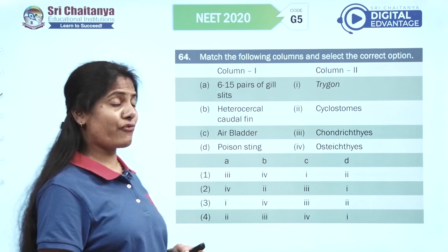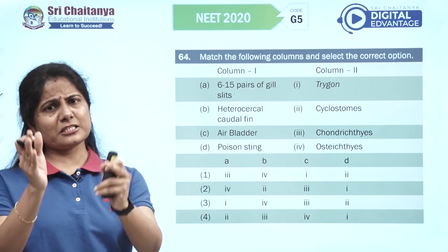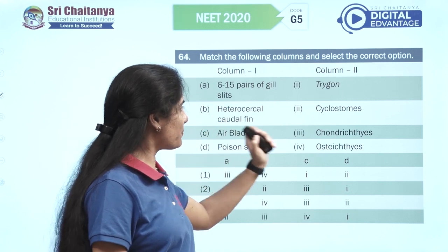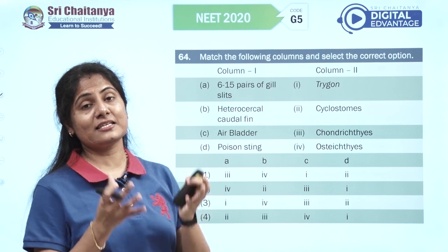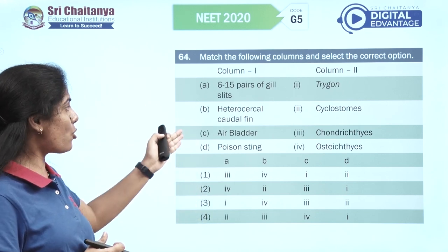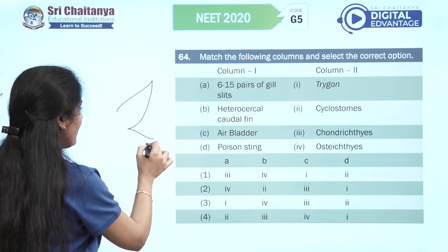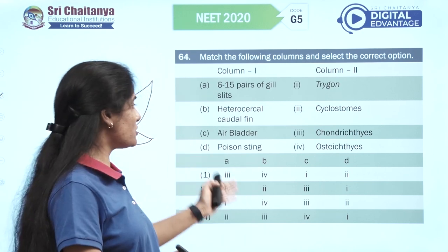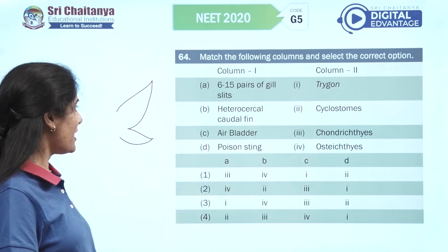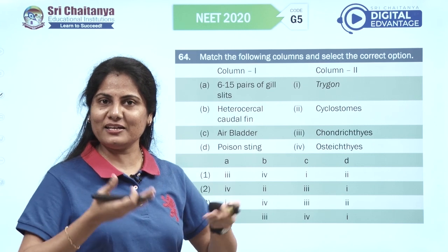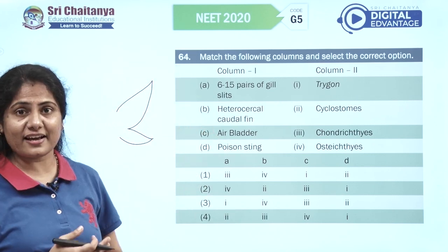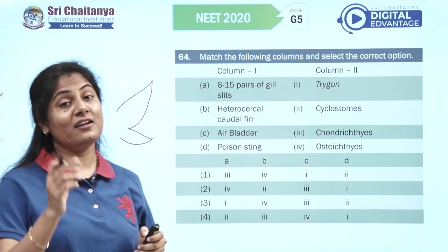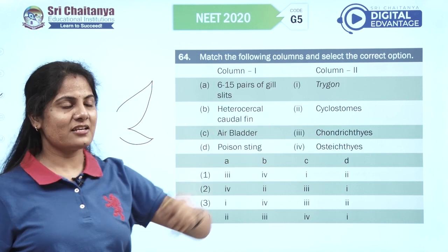Match the following from animal kingdom — quite an expected question for NEET. Six to fifteen pairs of gill slits is present in cyclostomes — the scaleless, jawless ones. Heterocercal tail — fins of unequal size — is present in sharks, which belong to Chondrichthyes, the cartilaginous ones. Air bladder maintains buoyancy and is found in Osteichthyes, the bony fishes. Poisonous sting is in Trygon — if torpedo were there you might have gotten confused.